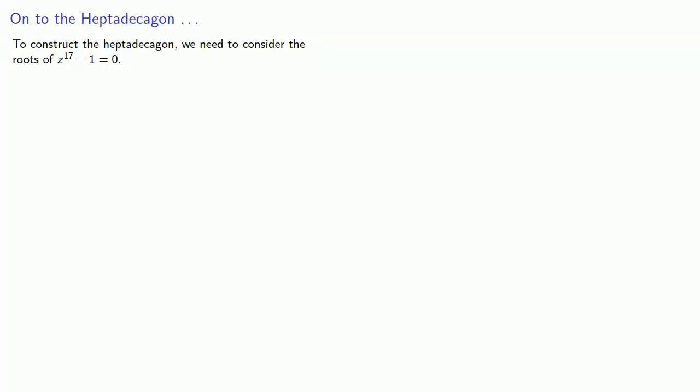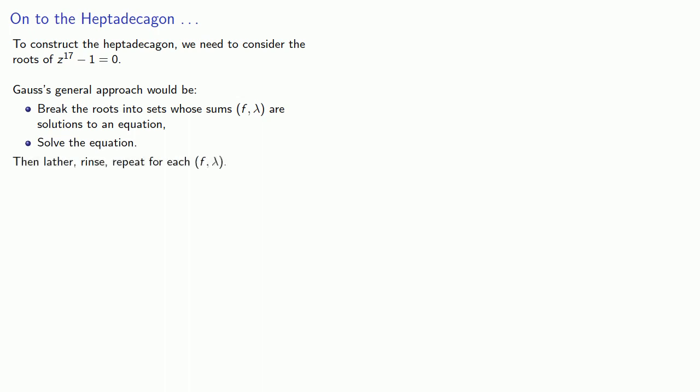So to construct the heptadecagon, we need to consider the roots of z to the 17th minus 1 equals 0. Gauss's approach would be to break the roots into sets whose sums, f lambda, are solutions to an equation, solve the equation, then lather, rinse, repeat for each f lambda. But will this always work?